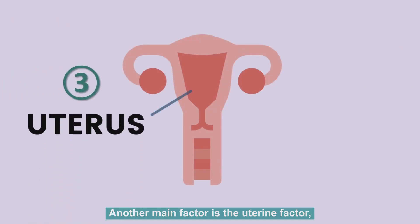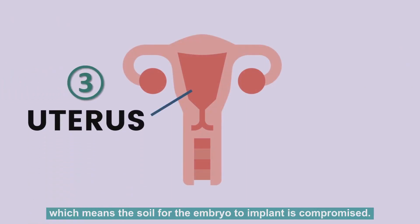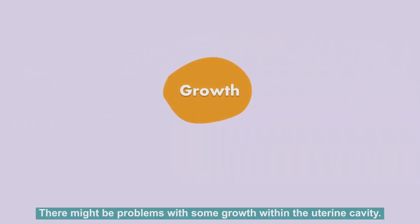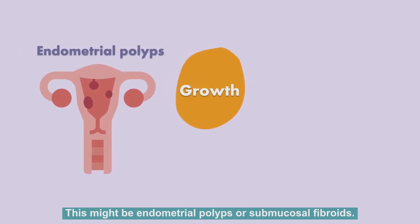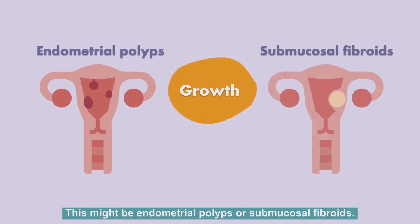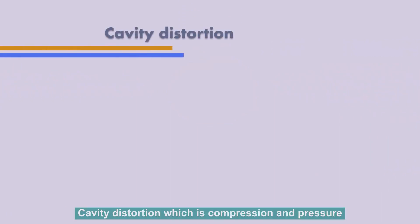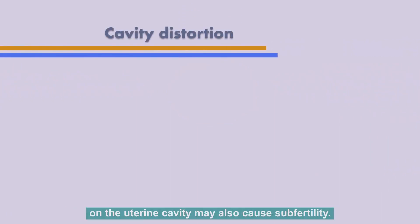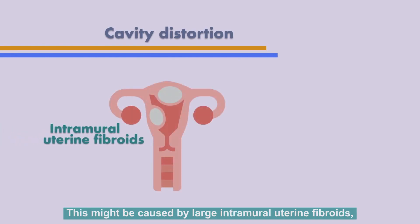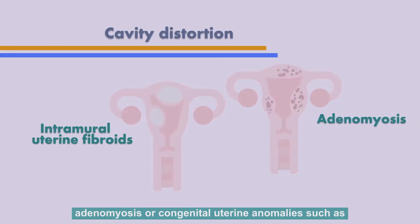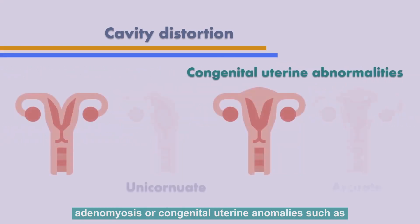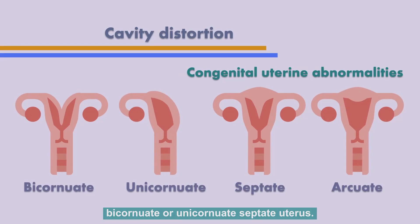Another main factor is the uterine factor, which means the soil for the embryo to implant is compromised. There might be problems with some growth within the uterine cavity, such as endometrial polyps or submucosal fibroids. Cavity distortion — compression and pressure on the uterine cavity — may also cause subfertility. This might be caused by large intramural uterine fibroids, adenomyosis, or congenital uterine anomalies, such as bicornuate or unicornuate septate uterus.